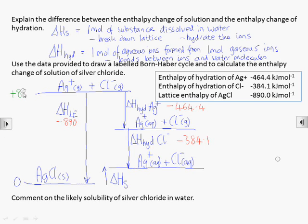I like to use these values to work out the energy of each level by adding the energy changes along the arrows. So the separate gaseous ions are plus 890, then minus 464.4 brings it down to plus 425.6, and minus 384.1 brings it down to 41.5.